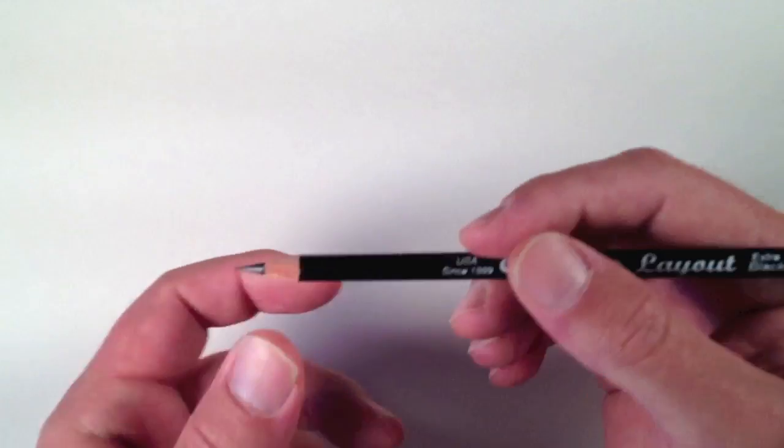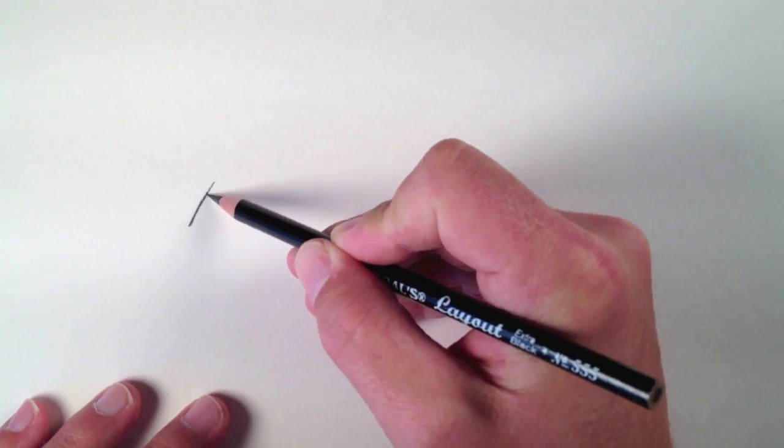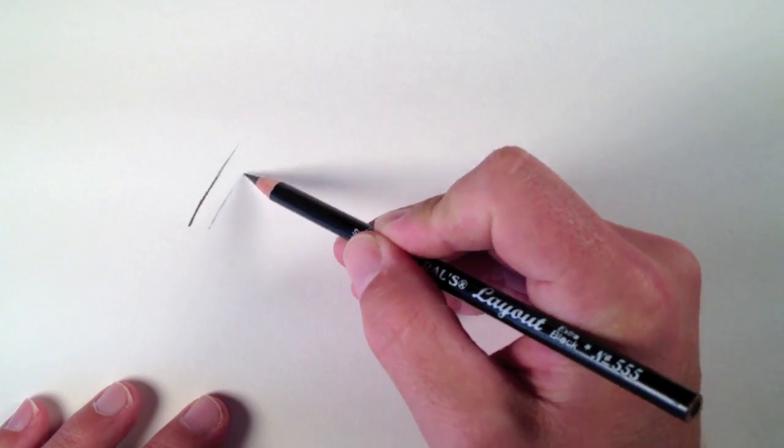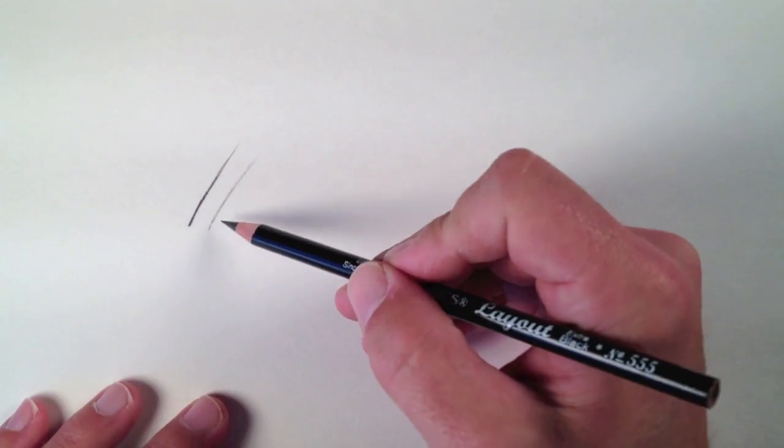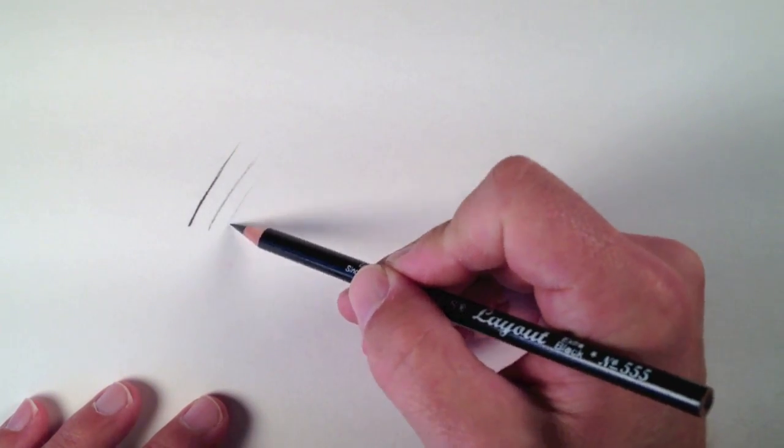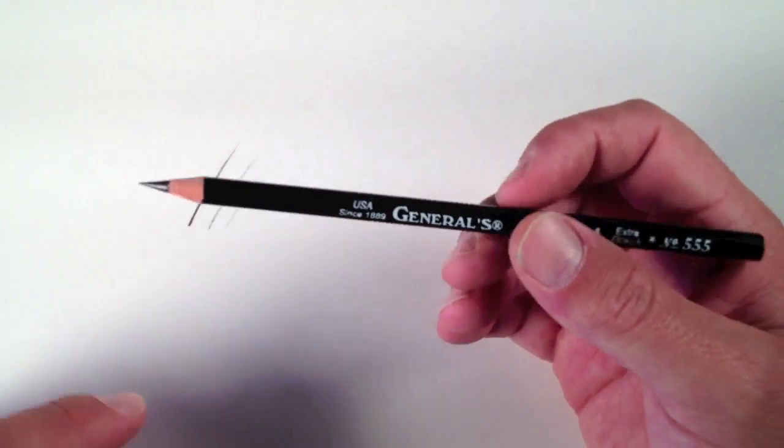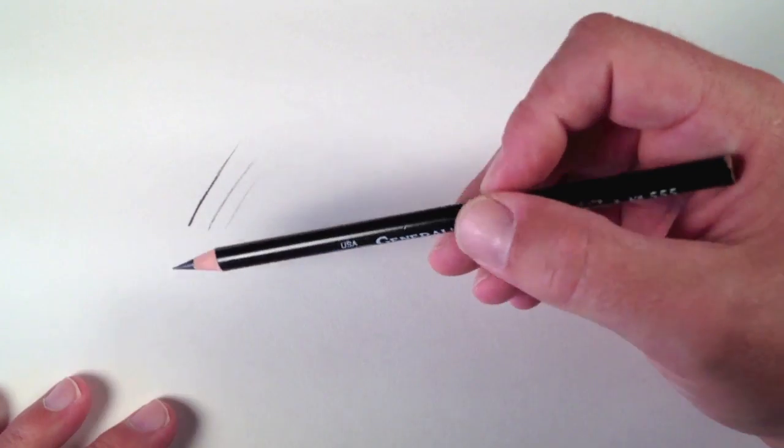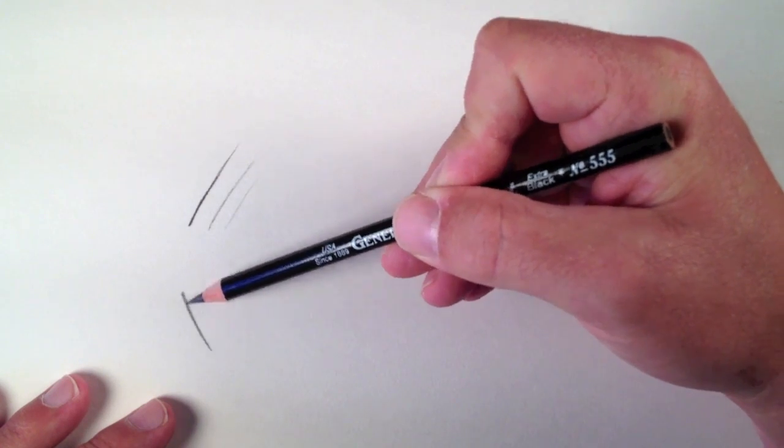As far as mark making goes, you can make a pretty dark mark with it. Again, I said it's about equivalent to a 3B. You can also make a medium toned mark with it, and you can even make a really light mark with it. So with a lot of pencil box sets, you are buying those box sets to get all the range of marks that you can make with it. With the General's pencil, you get all those marks in one.